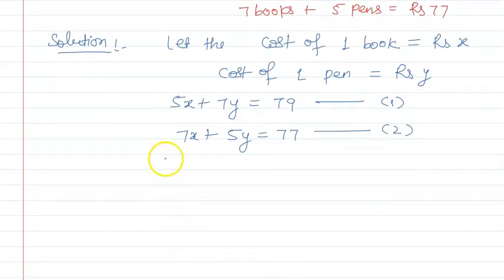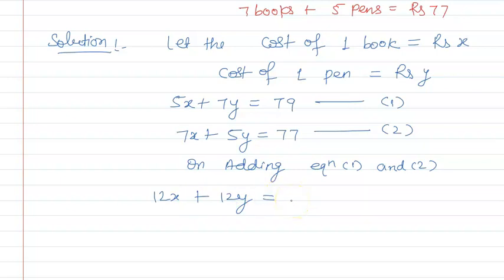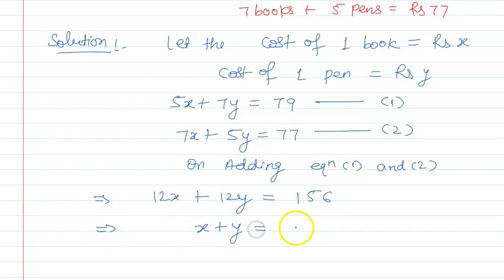Now, if we add both equations, we get 5x + 7x = 12x and 7y + 5y = 12y, which will be equal to 79 plus 77, so that will be equal to 156. If we divide both sides by 12, we get x plus y is equal to 13. Let's call this equation 3.